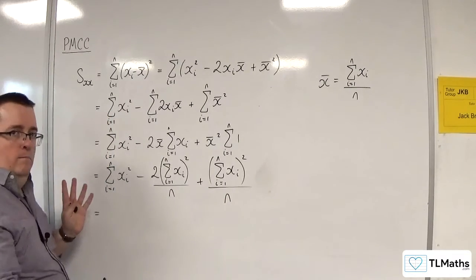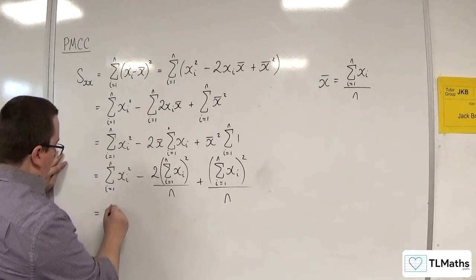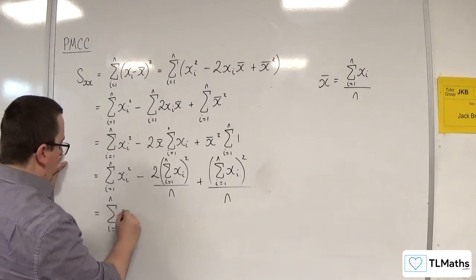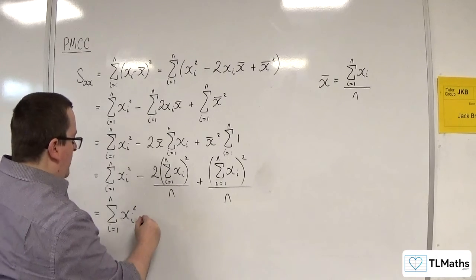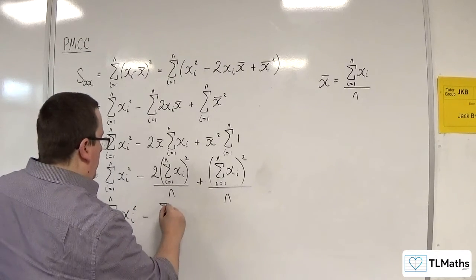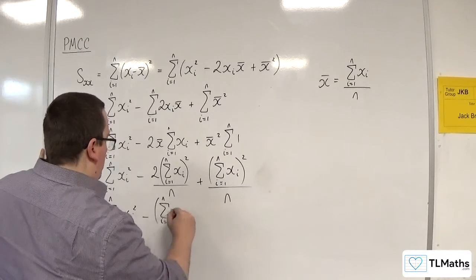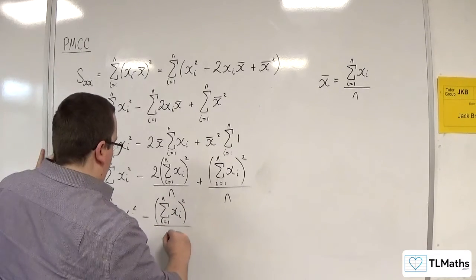So actually I've just got minus one of them. So this is the sum from i is 1 to n of XI squared take away the sum from i is 1 to n of XI all squared divided by n.